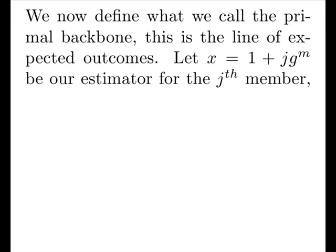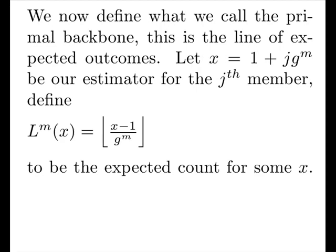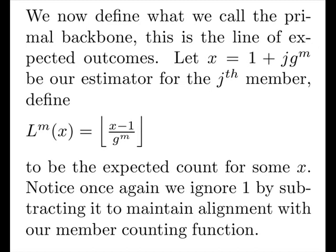We can now define what we call the primal backbone. This is the line of expected outcomes. Let X equal 1 plus J times our local average be our estimator for the Jth member. Then define L, our lumbar function, or backbone function, at M, to be the floor of X minus 1 divided by the average. This is the expected count for some X. Notice again, we ignore 1 by subtracting it to maintain alignment with our member counting function.